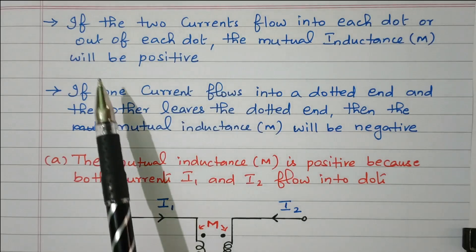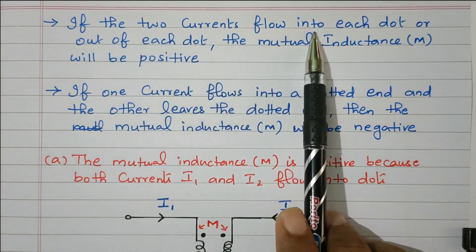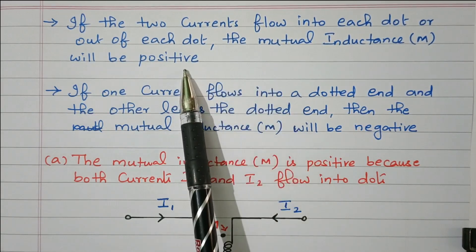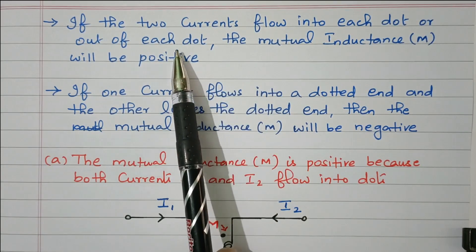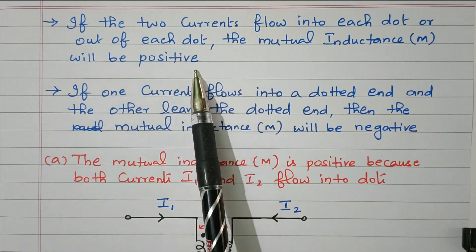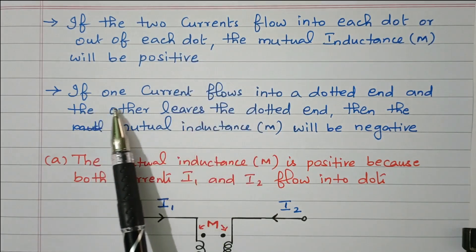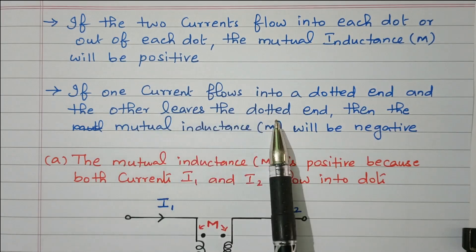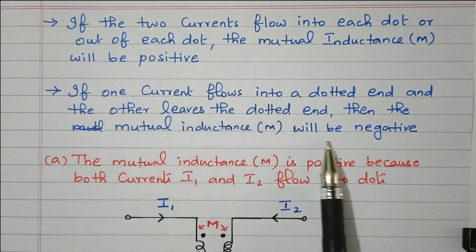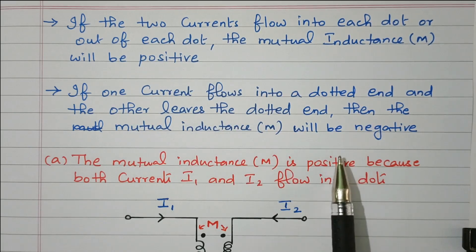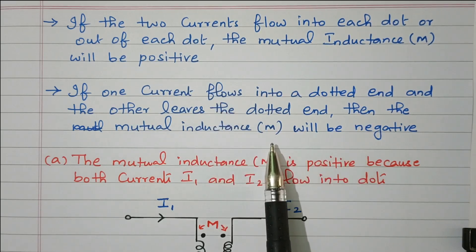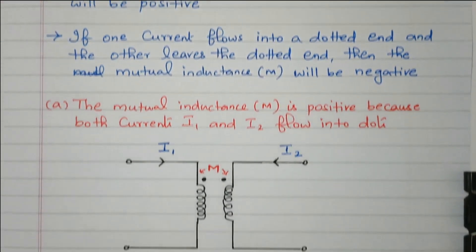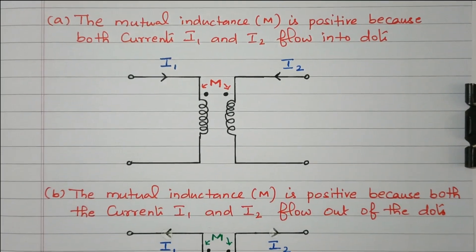The first case: if both currents flow into each dot, or both flow out of each dot, then mutual inductance will be positive. If one current is flowing into the dotted end and another current leaves the dotted end, then mutual inductance will be negative. So mutual inductance may be positive or negative based on the current direction. We have three different cases, and the corresponding diagrams are given.